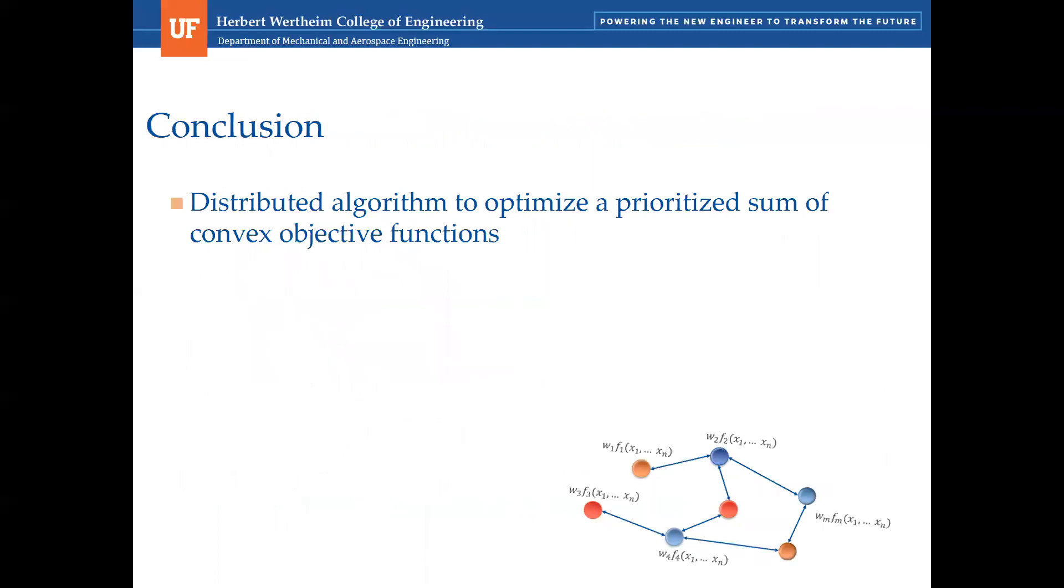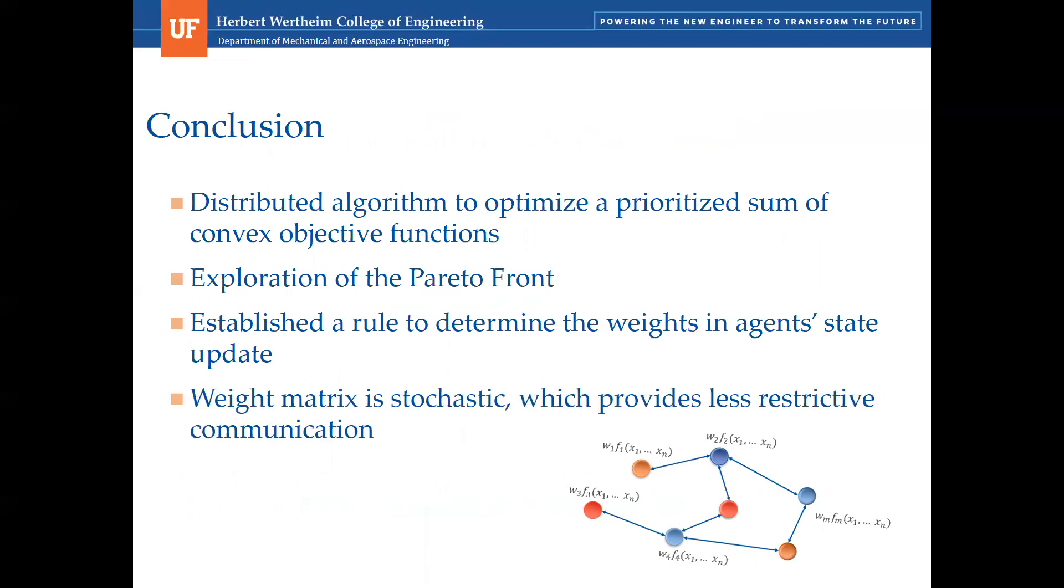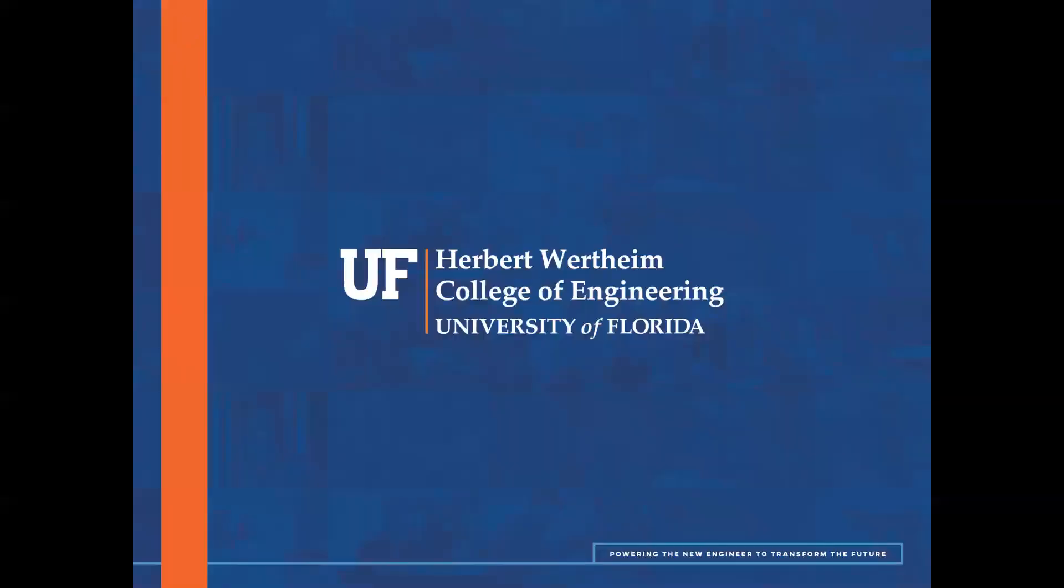This paper, as a conclusion, proposed a distributed algorithm to optimize a prioritized sum of convex objective functions. The algorithm allows the exploration of the Pareto front of the overall objective, which has a direct influence on the agent's final results. We establish a rule to determine the weights in agent state update. The weight matrix in this paper is row stochastic, which provides a less restrictive communication compared to several related works where the matrix is doubly stochastic. And we studied the convergence of the algorithm and provided explicit bounds for the transition matrix, the agent state update matrix, as well as a performance bound for the algorithm. So I hope you enjoyed this presentation and feel free to ask any questions you may have. Thank you.